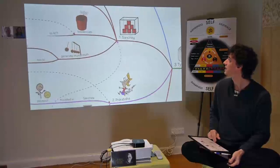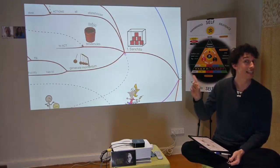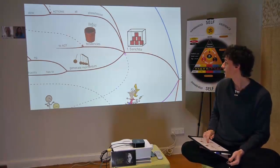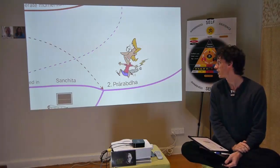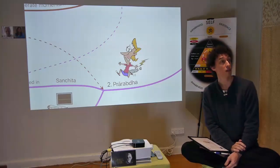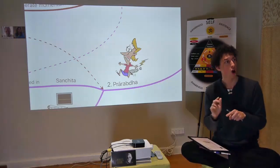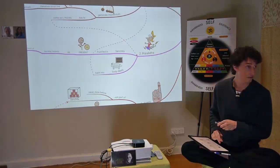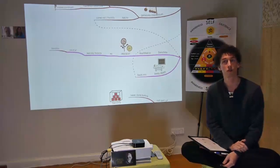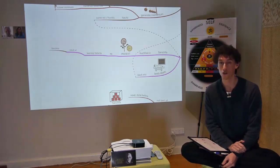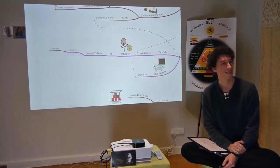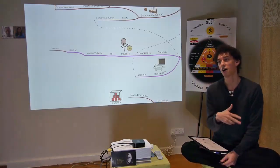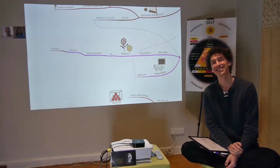Sanchita has to fructify as a tendency, depending on the right situation and circumstance, into the present moment. That person experiencing a thunderbolt right now — the effect of the cause is being experienced in the present moment. Sanchita is fructified as Prarabdha. Why are you learning Vedanta right now? Does that not imply you've conducted a similar operation in the past?